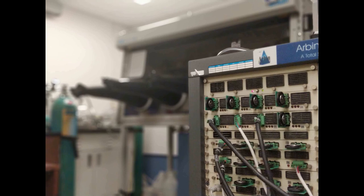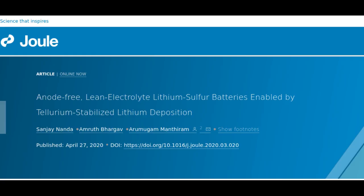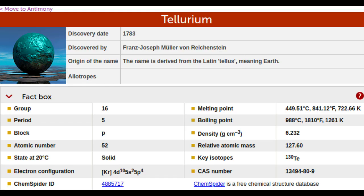The team's findings, published in the journal Joule, show that creating an artificial layer containing tellurium inside the battery in-situ on top of lithium metal can make it last four times longer.